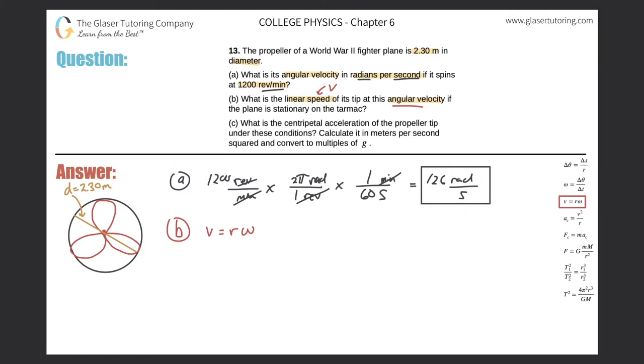Now all I need to know is the radius. They told us the diameter, and here I have my picture. Here's the diameter in gold, so the radius would just be half of that. The tangential velocity should be 2.30 divided by 2 to get the radius, then multiply it by the angular velocity, which was 126.